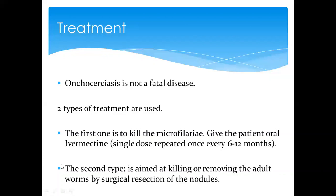For treatment, people often live with onchocerciasis for a long time and ignore it until it becomes a serious issue. The first-line treatment is ivermectin, which kills the microfilariae — normally given as a single dose every six or twelve months depending on the case. The second treatment is surgical resection of the nodules to remove the adult worms. Typically, ivermectin is given first, and then the nodules are surgically removed.